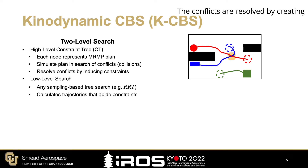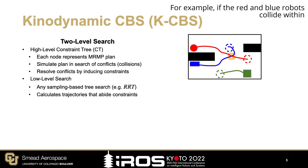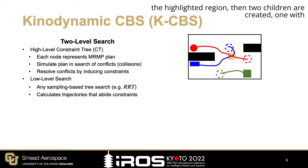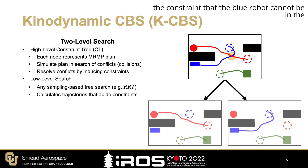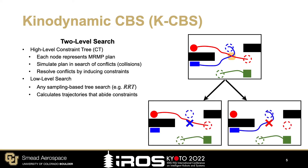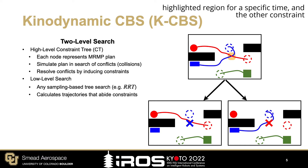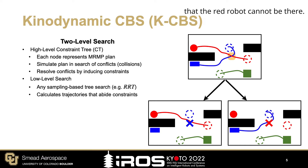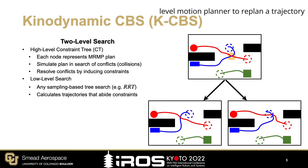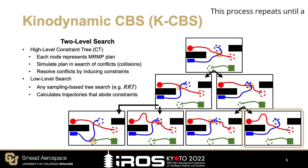The conflicts are resolved by creating child nodes and adding constraints. For example, if the red and blue robots collide within the highlighted region, then two children are created: one with the constraint that the blue robot cannot be in the highlighted region for a specific time, and the other constraint that the red robot cannot be there. Then each child node calls the low-level motion planner to re-plan a trajectory for the newly constrained robot. This process repeats until a non-colliding MRMP plan is found.